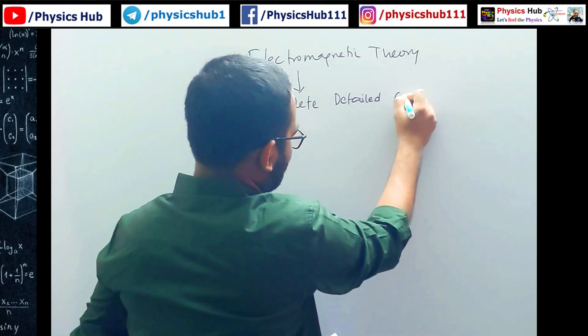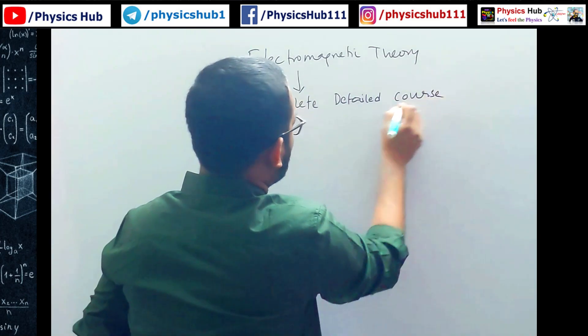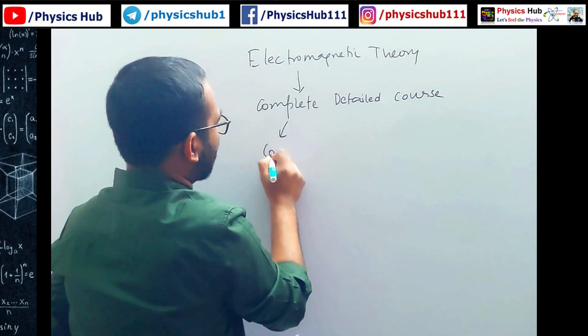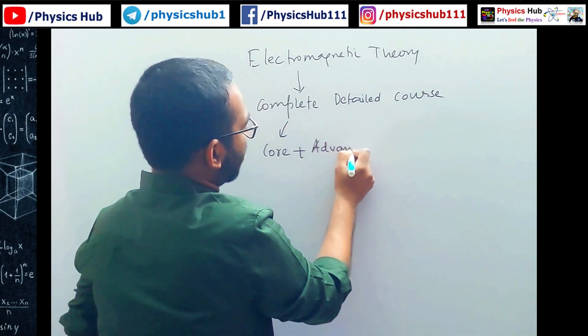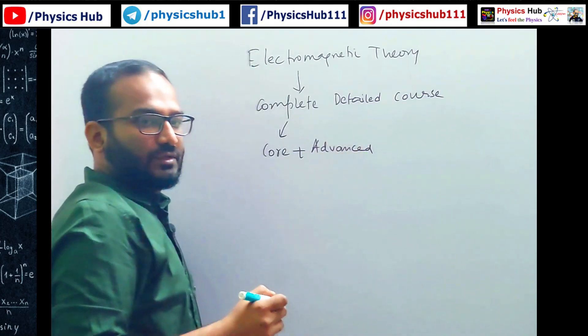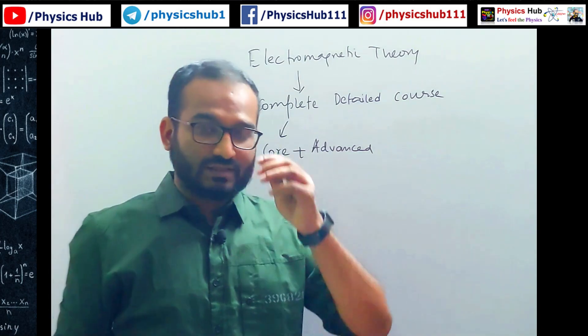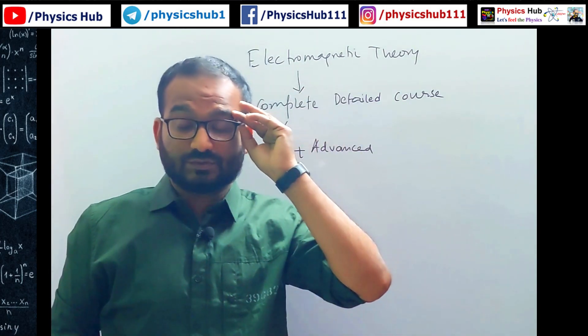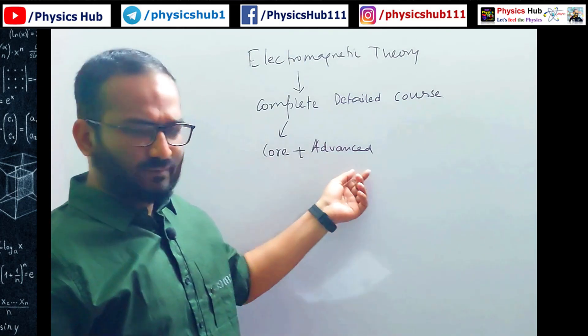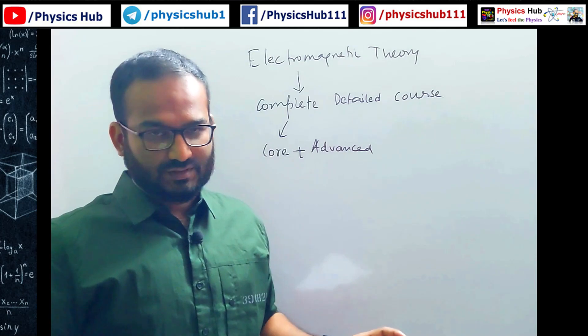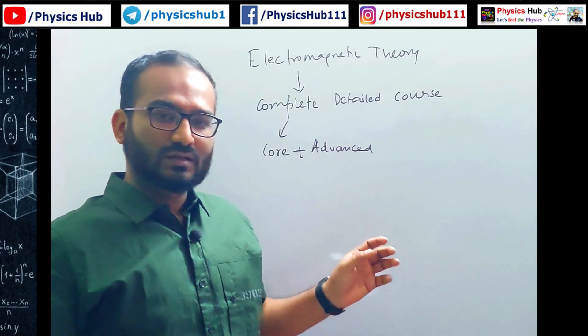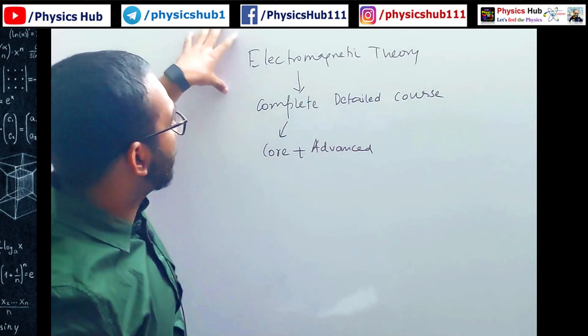Both complete means here we are talking about core as well as the advanced portion. Whatever things are there in your CSIR NET Physical Science electromagnetic theory portion, both core and advanced portions will be covered in detail from the very basic. Even a layman will be able to join this course and learn electromagnetic theory efficiently.